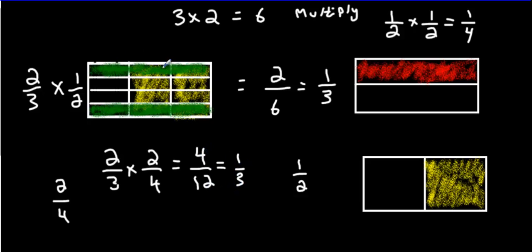What I'm showing you here is the visual on why it works. Multiplication makes more pieces — you have to understand that. The second thing you have to understand is the answer is only where we have two colors. And of course, you need to know how to reduce — we're going to divide by four here, and divide this by four.